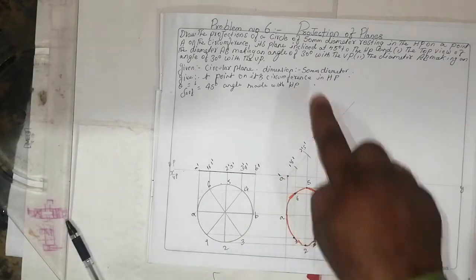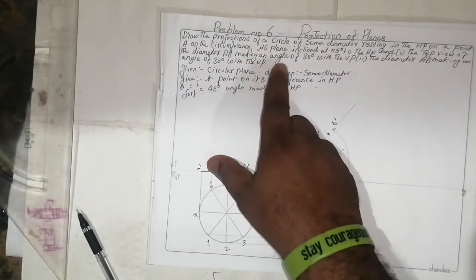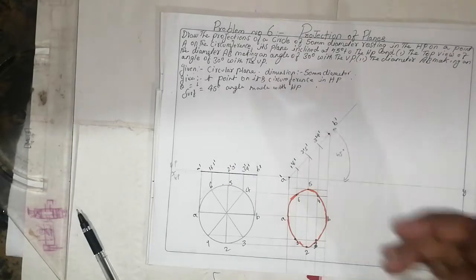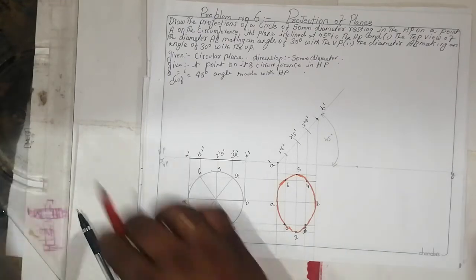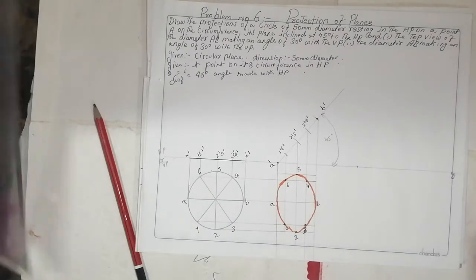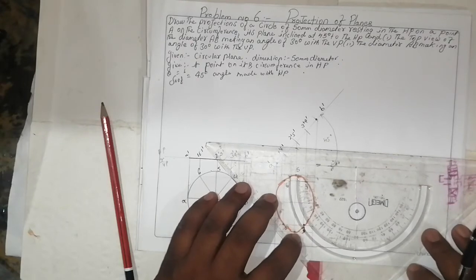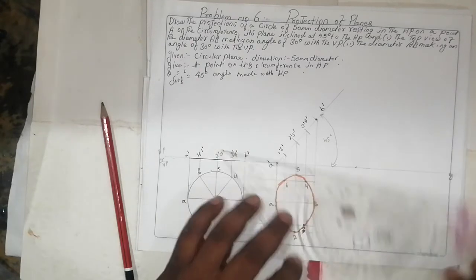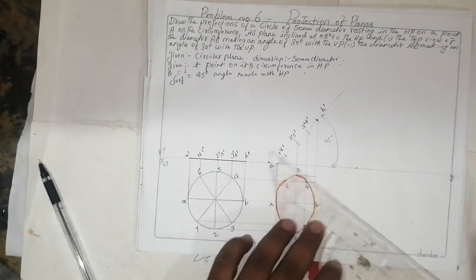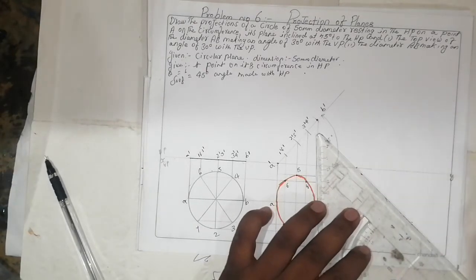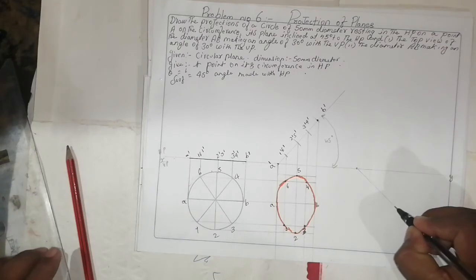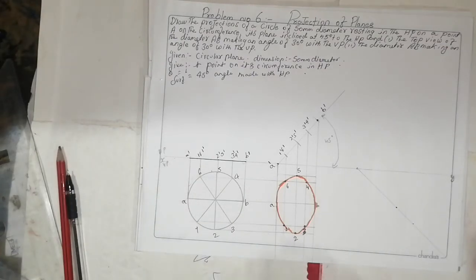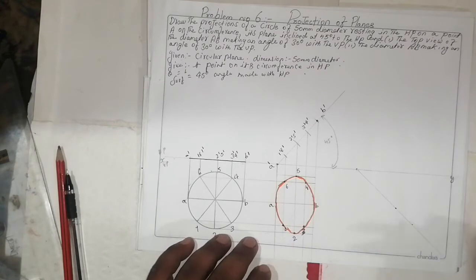The diameter AB makes an angle of 30 degrees with the VP. Make one point here, take 30 degrees, and draw a simple line like this. Keep the position and take 30 degrees, then draw the line.